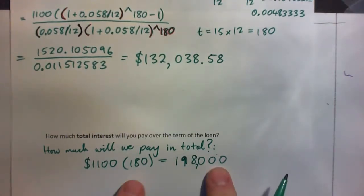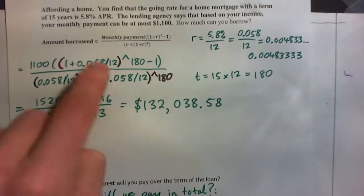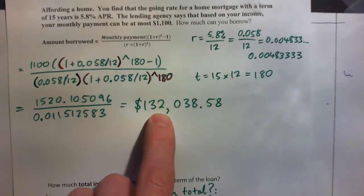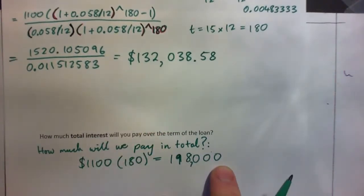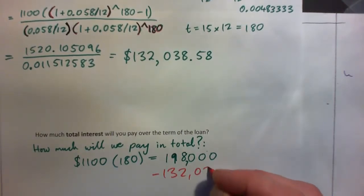What does that mean? So this is the amount of money you're paying, because you're going to make 180 payments of $1,100 and it'll all amount to $198,000. Now your loan amount, this is the amount borrowed, is $132,038.58. So how do we figure out the total interest? Well, do you think you subtract?